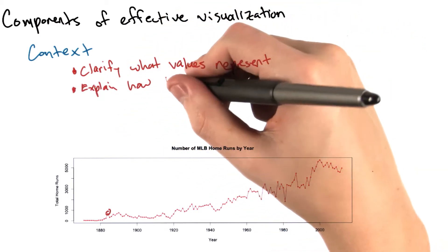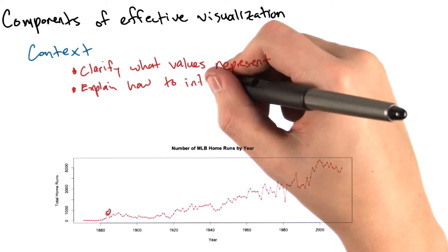Number of MLB home runs by year, labeling the axes: year and total home runs.